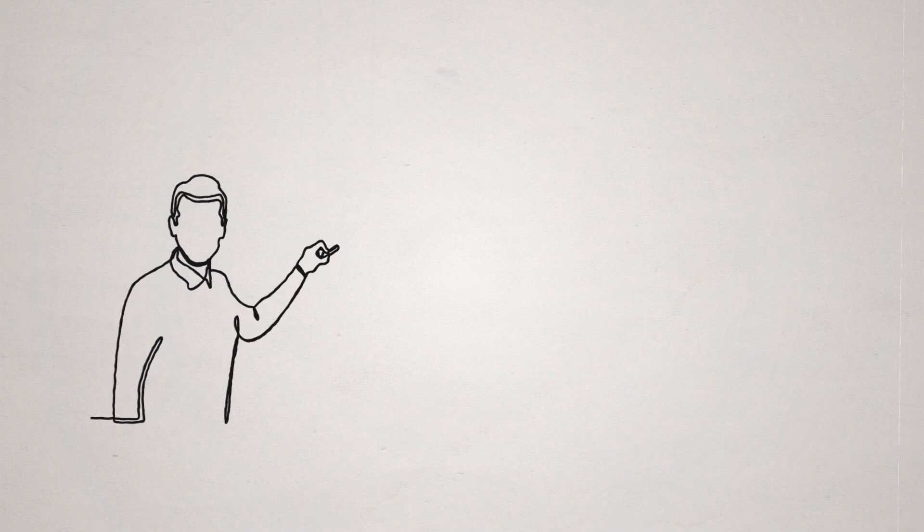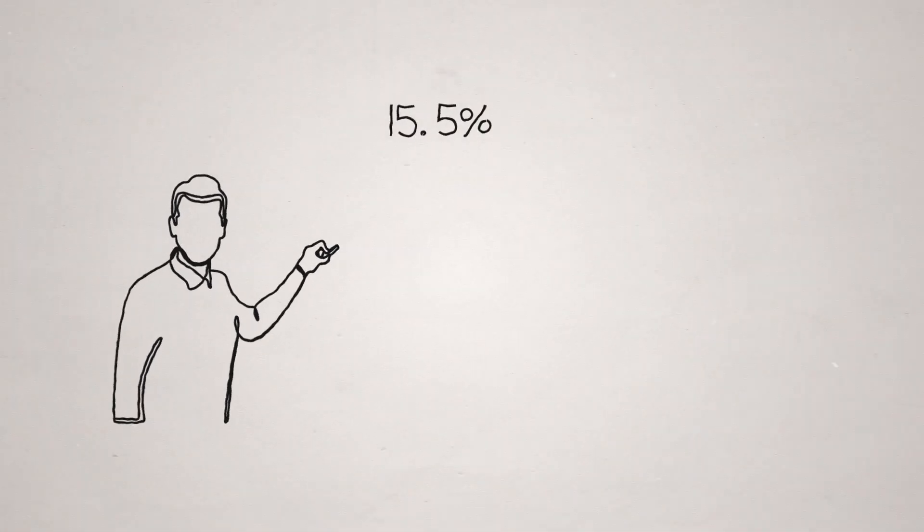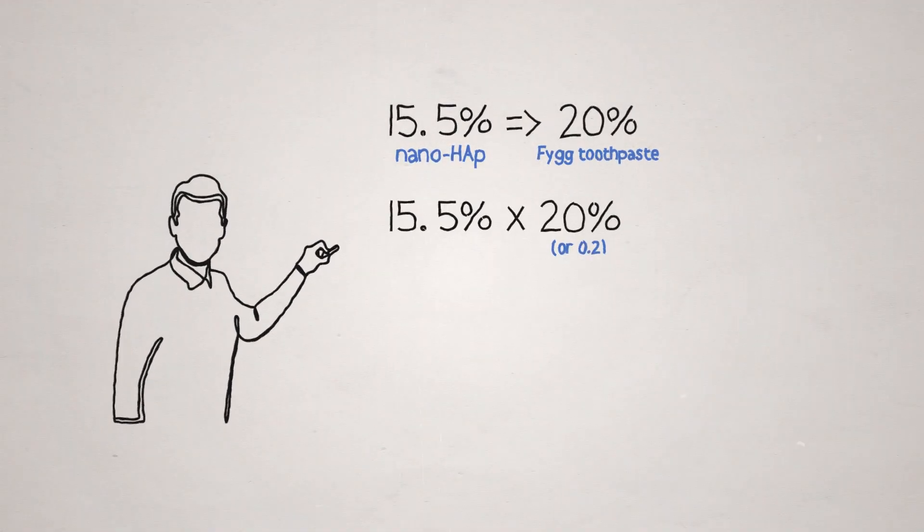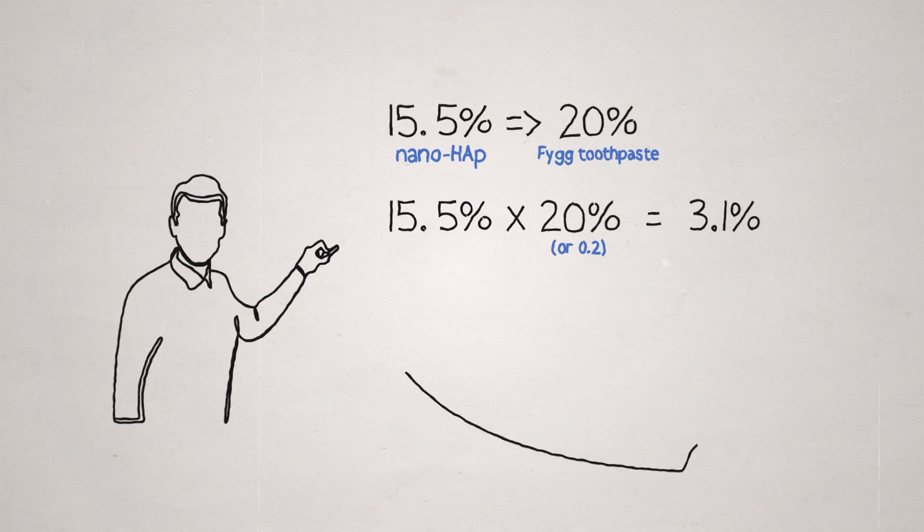Okay, so let's do the math. A 15.5% solution of nanohydroxyapatite makes up 20% of our toothpaste. 15.5% times 20% or 0.2 equals 3.1%. In other words, by the time we finish,